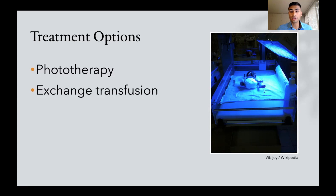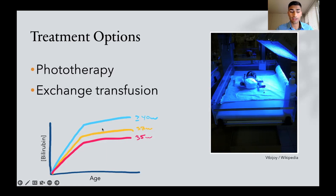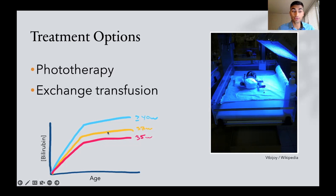How we think about using these is we use something called a nomogram. You look at the baby's age — how many hours or days of life — and what their level of bilirubin is. These nomograms are published by the American Academy of Pediatrics, and you look at what gestational age the baby was when they were born — 35, 37, or over 40 weeks — and you follow that line on the graph to see the thresholds for either doing phototherapy or exchange transfusion.